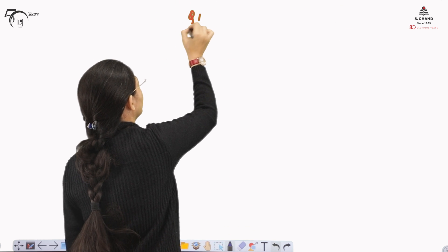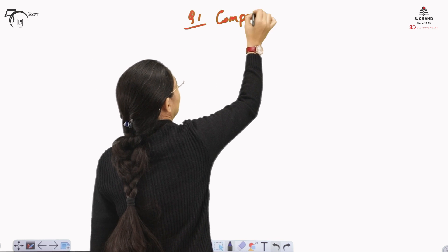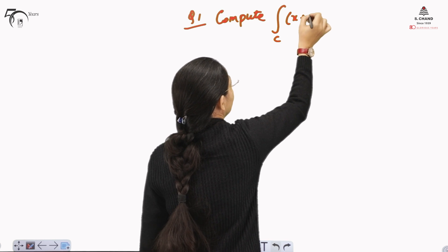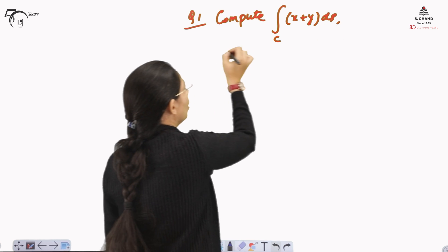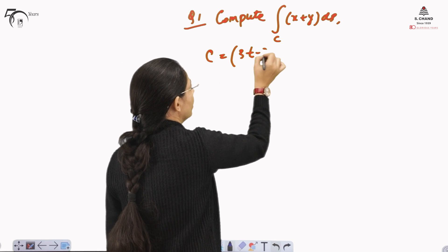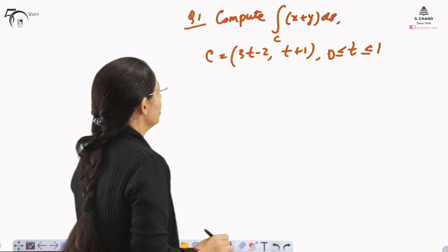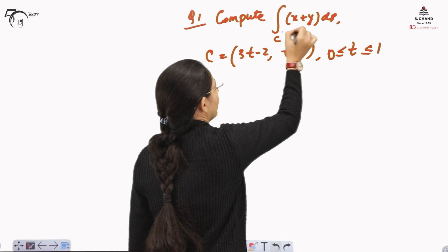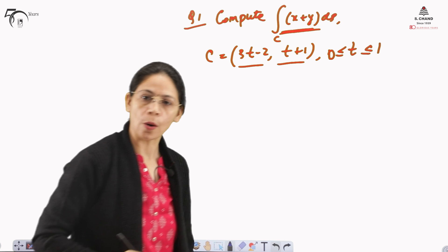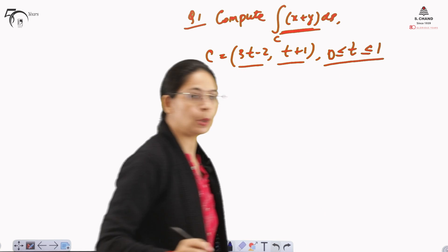This is example number one. Compute ∫C (x + y) dS over C, where C is given as (3T − 2, T + 1) where T is varying from 0 to 1. Here our F(X,Y) is given in terms of x + y, and X and Y are already given in the form of one parameter T, and the value of that parameter is also given.